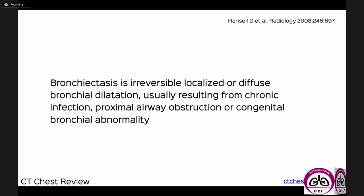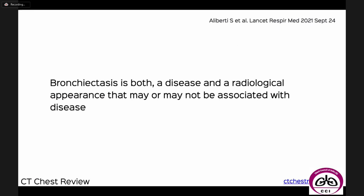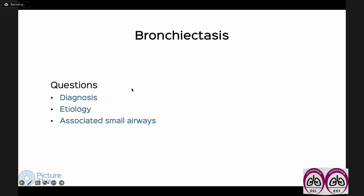Let's start with bronchiectasis — one of the simplest diagnoses we can make. It's an irreversible, localized or diffuse bronchial dilatation, and there can be a bunch of etiologies. Bronchiectasis is unique in that it is both a clinical disease and a radiological appearance that may or may not be associated with disease. A patient may have bronchiectasis on CT with no symptoms as an incidental finding.